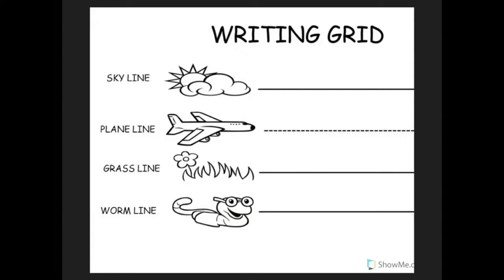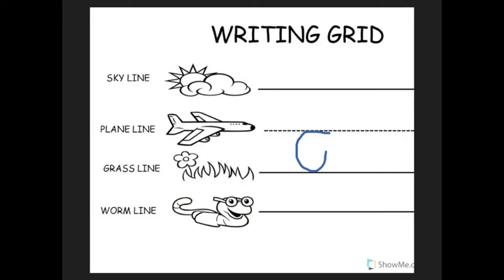P. P is a plain line letter. Put your pencil on the plain line, pull down to the worm line, bounce back up, and fly forward and around. P, pan, p. Q. Q is a plain line round letter. Put your pencil on the plain line, fly backwards, curve to the grass line, back up to the plain line, pull down to the worm line, and forward for a hook. Q, queen, qu.